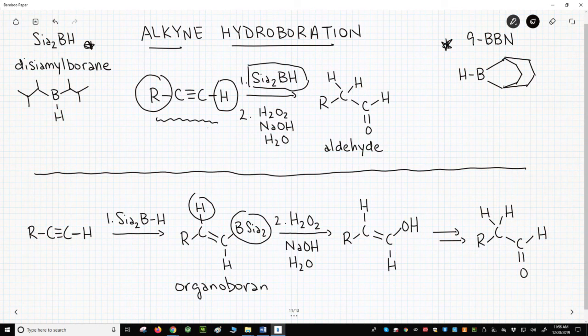The second step is the oxidation and uses some base sodium hydroxide, water, and hydrogen peroxide. As with alkene hydroborations, the oxidation converts the boron group to an OH group with retention of stereochemistry. That gives us this enol.